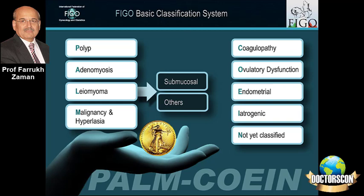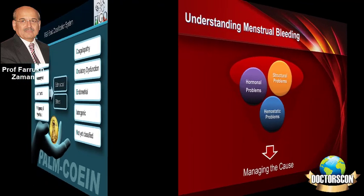And on the other side there are Coagulopathy, Ovulatory dysfunction, Endometrial causes, Iatrogenic, and Not yet classified — making the COEIN side. From this acronym you can appreciate that abnormal bleeding will fall into one of these categories.